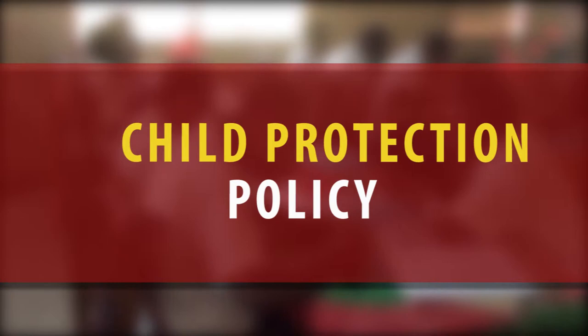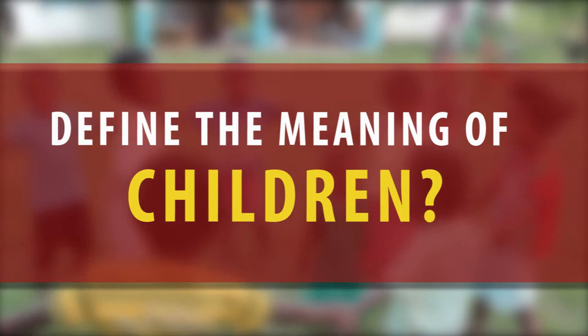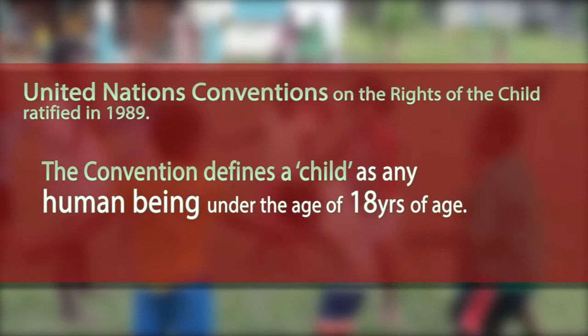So what is a Child Protection Policy and what is it all about? First, let's define the meaning of children. Children is defined in the context of the United Nations Conventions on the Rights of the Child, ratified in 1989. A convention defines a child as any human being under the age of 18 years.